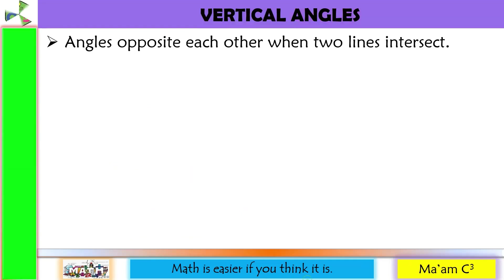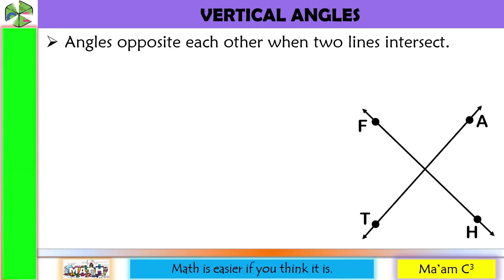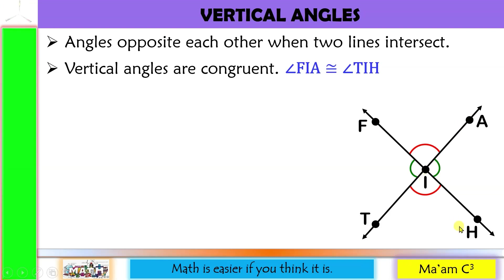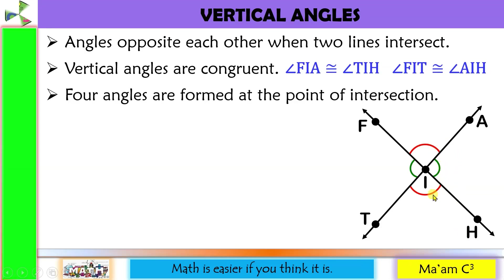Another pair is vertical angles — angles opposite each other when two lines intersect. With intersecting lines, this angle is opposite this angle. Vertical angles are congruent. Therefore, angle FIA is congruent to angle TIH. This angle is also opposite with this angle, so angle FIT is congruent with angle AIH. There are four angles formed at the point of intersection, and the point of intersection is the common vertex of the four angles.